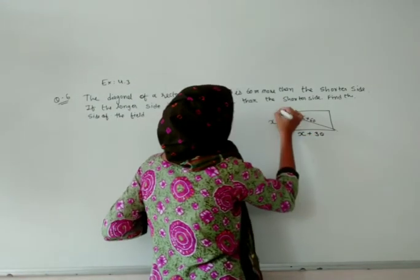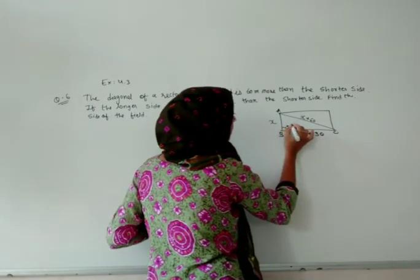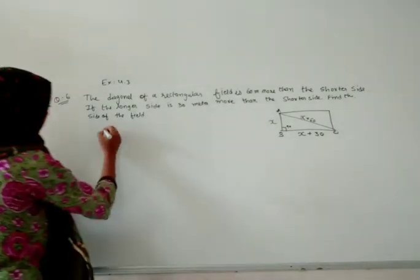So it will become x plus 30. If we are taking this triangle as ABC and it is a rectangle, this angle will be 90 degrees. Let me begin the question.